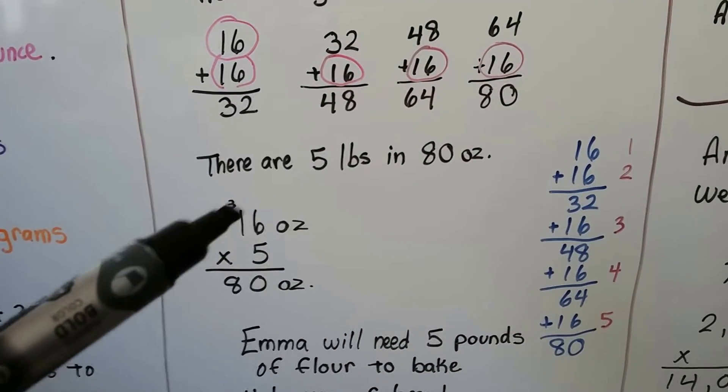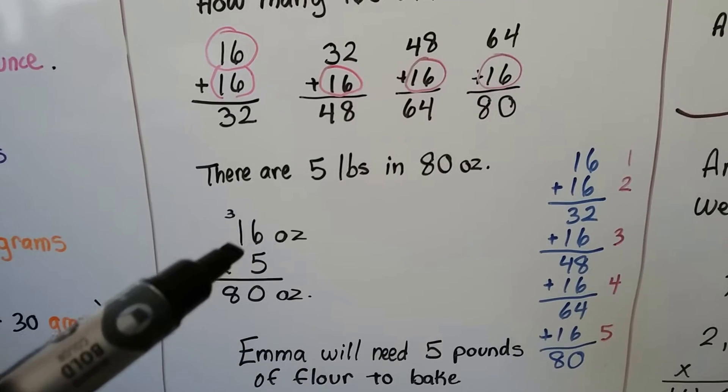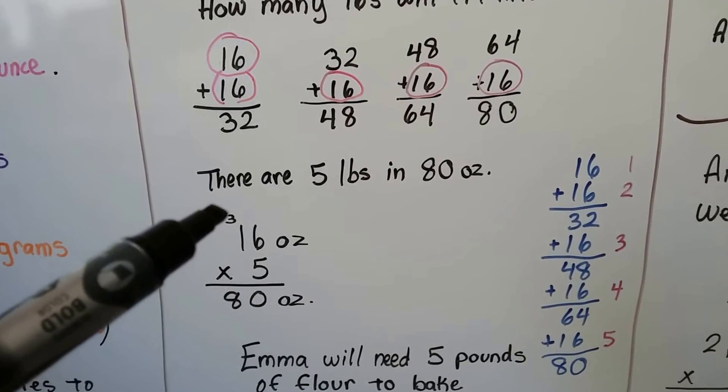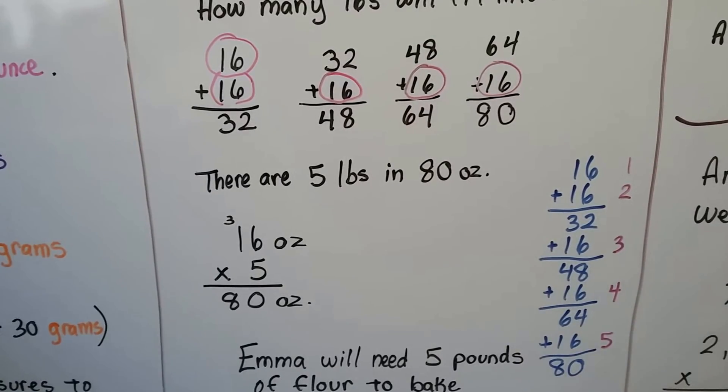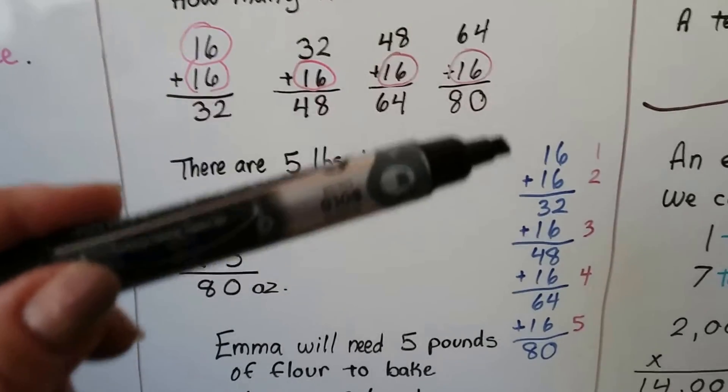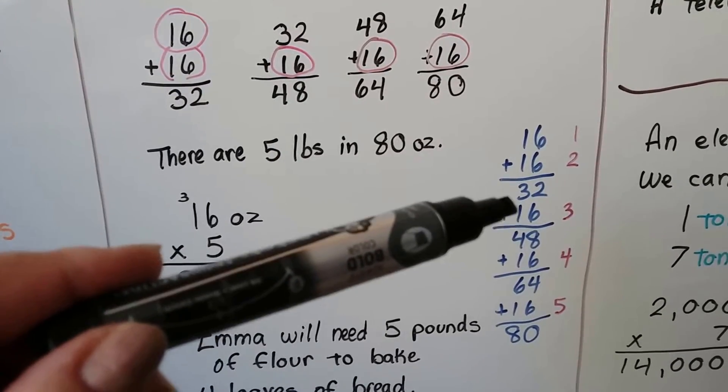We can do 16 ounces times 5 to see if it's 80. 5 times 6 is 30. We regroup the 3 and put the 0 down, and 5 times 1 is 5, 6, 7, 8. We have 80 ounces. So 5 pounds is 80 ounces. We could also do repeated addition and add another 16 underneath the sum.